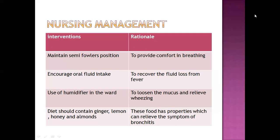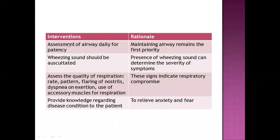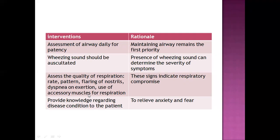The diet should contain ginger, lemon, honey, and almonds, as these foods have properties which can relieve the symptoms of bronchitis. We can assess the airway daily through auscultation and measurement of vital signs. Maintaining a clear airway remains our priority. Wheezing sounds should be auscultated and the quality of respiration assessed — including rate, pattern, nostril flaring, dyspnea on exertion, and use of accessory muscles for respiration beyond the intercostal muscles and diaphragm, which are signs of respiratory distress. Providing knowledge to the patient is also important, as it helps relieve anxiety and fear.